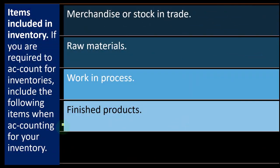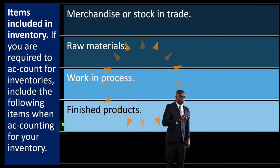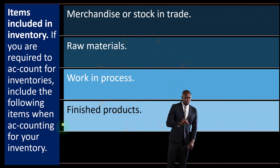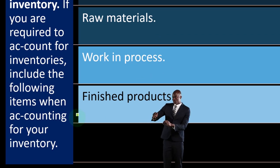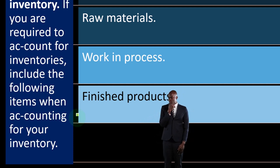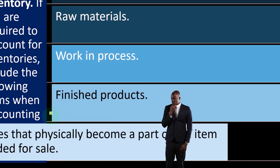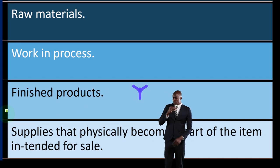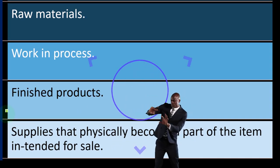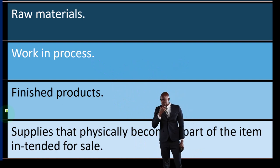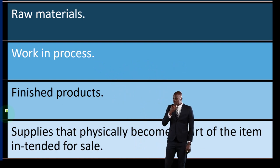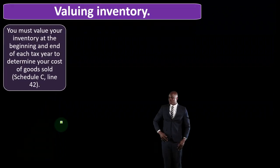When the finished goods aren't done they're still in process — not raw anymore, but not finished either. Then you have finished products: when we've converted the raw materials into finished goods, ready to sell — plus supplies that physically become a part of the item intended for sale.